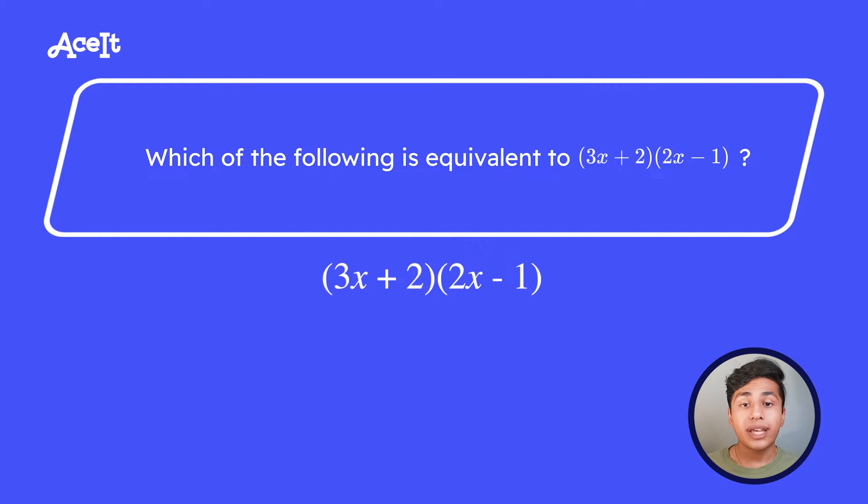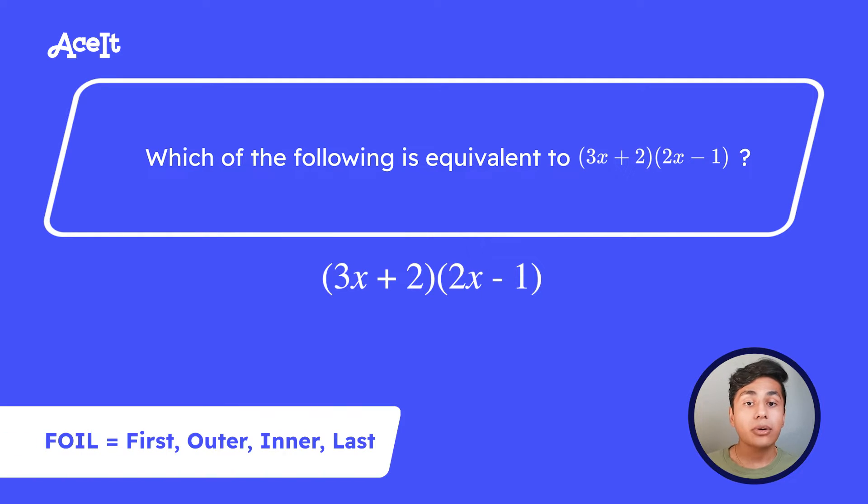Which of the following is equivalent to 3x plus 2 times 2x minus 1? Now to solve this, we're going to have to use a method called FOIL because we are multiplying two binomials together. So FOIL stands for first, outer, inner, last, and it's what you use to multiply binomials.